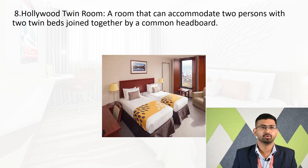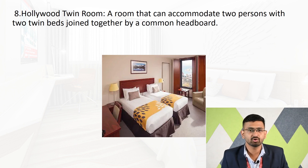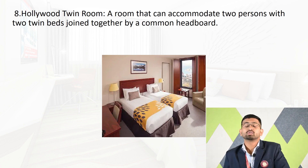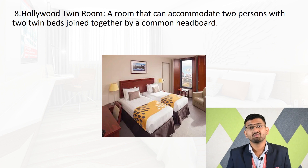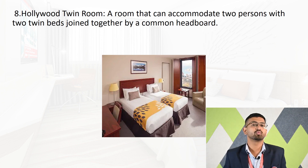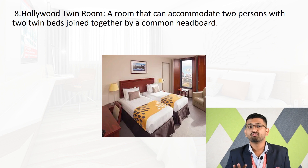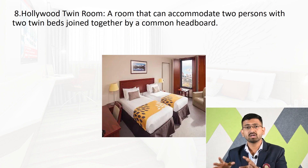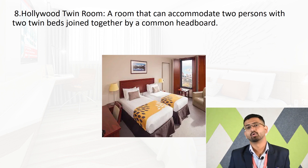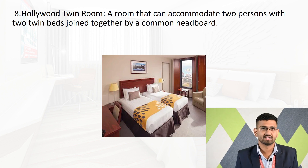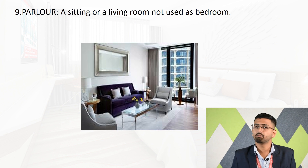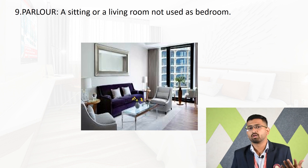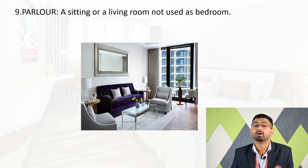Next is the Hollywood twin room — a room that can accommodate two persons with two twin beds joined together with a common headboard. Unlike the regular twin room where the beds have separate headboards, in the Hollywood twin room the two beds share a common headboard.